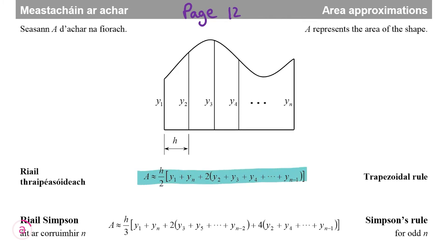The trapezoidal rule is the first formula on page 12. h is the interval between each of the perpendicular measures, y₁ is the first measure, yₙ is the final measure, and then we add two times the rest of the measures summed together. Let's go back to our question and work out h, y₁, yₙ and all the other y values, then fill them into the formula.